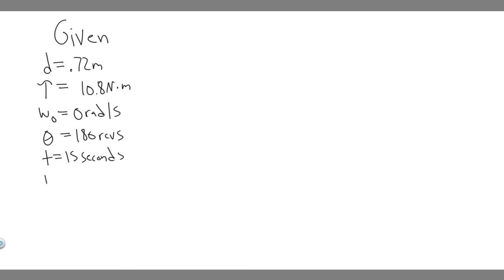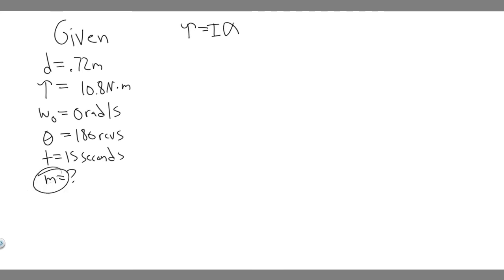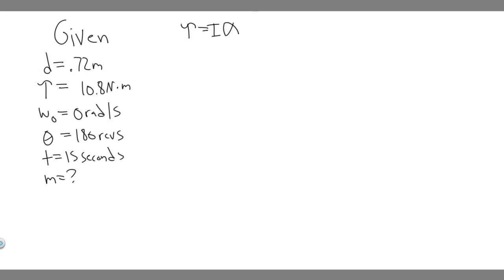What we're trying to find is the mass. To solve this, we'll relate torque using the formula: torque equals inertia multiplied by angular acceleration, or alpha. We're given torque; inertia will contain the mass variable we need, and we can solve for angular acceleration from the other given variables.